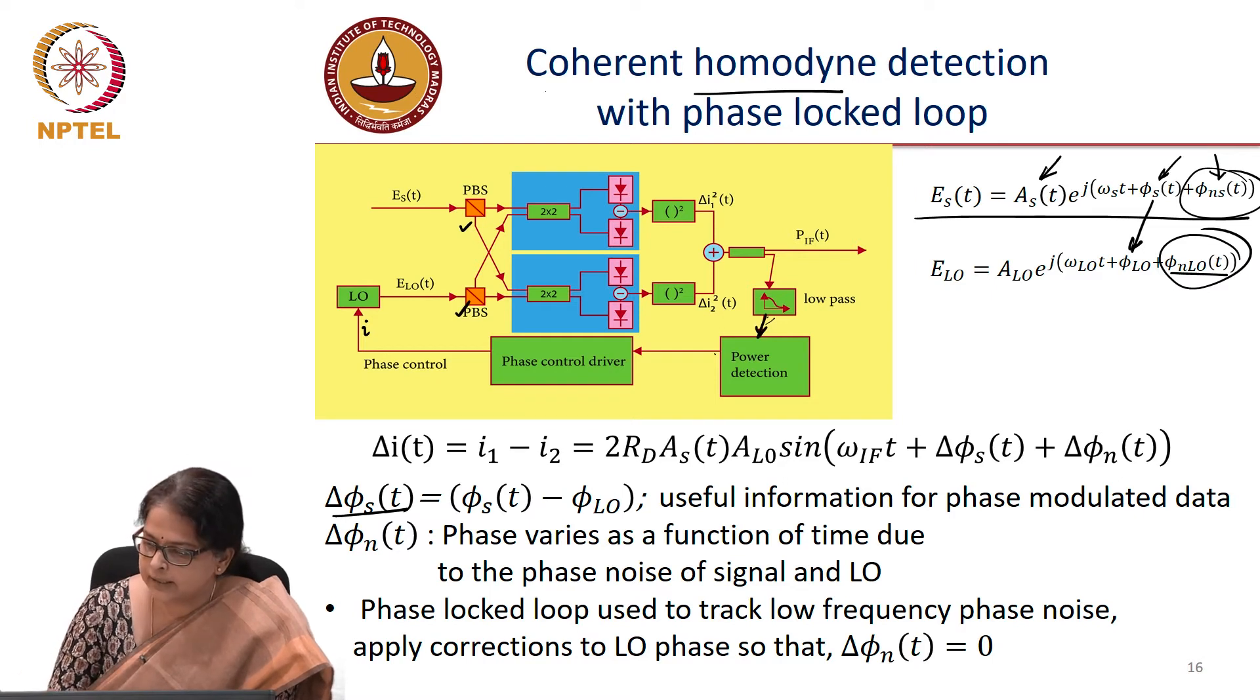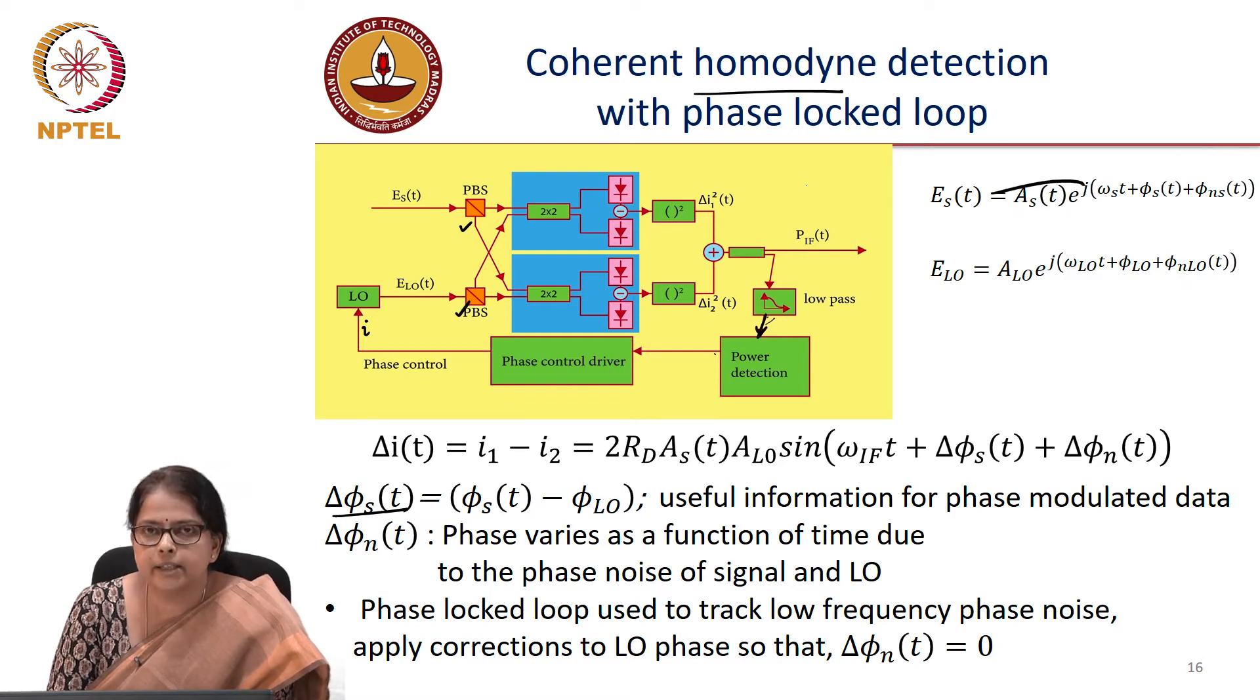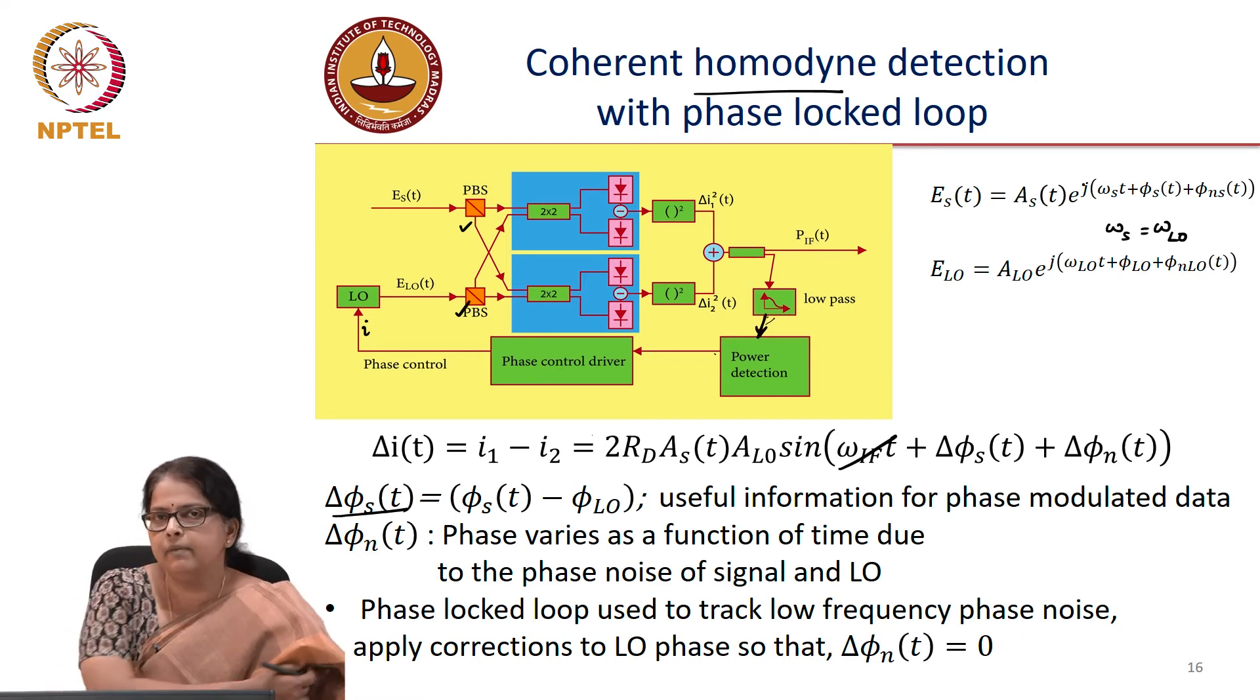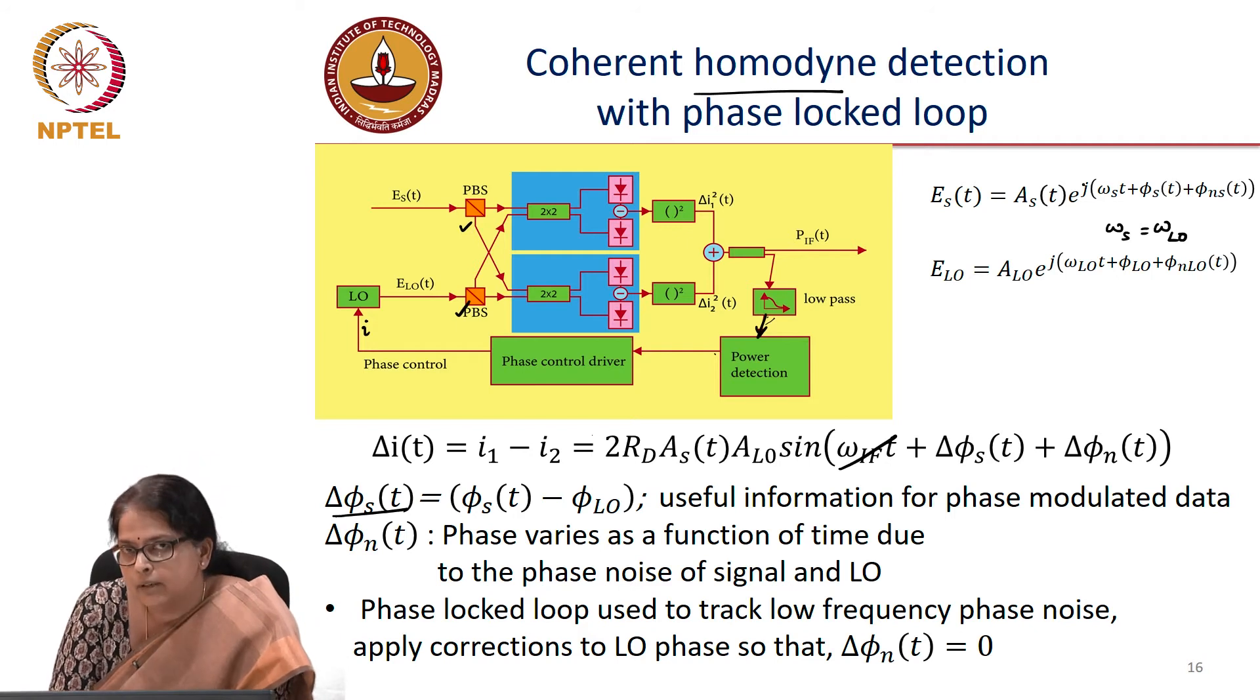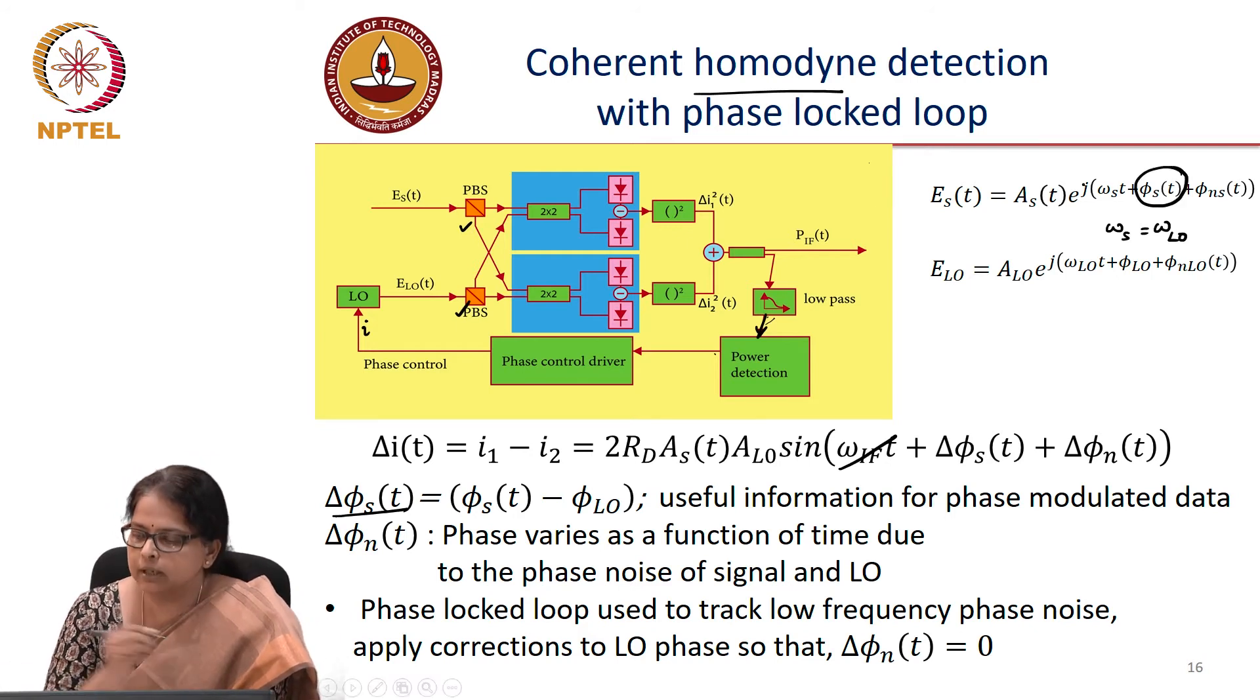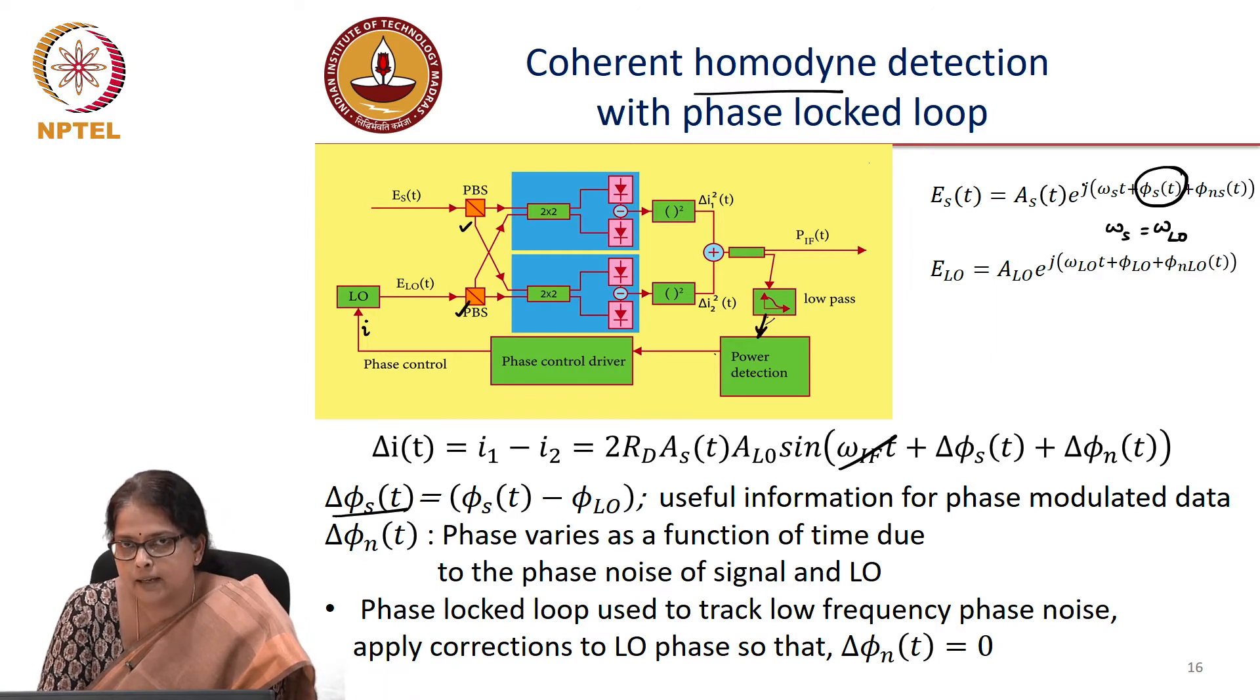Now in a homodyne detection system, we know that omega s is equal to omega LO. So there is no IF frequency. So the arrangement is the same. We have a polarization diverse coherent receiver. We are now interested to find out the phase modulated, the phase carried by the signal.